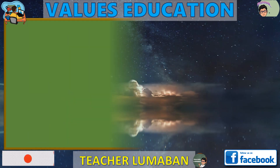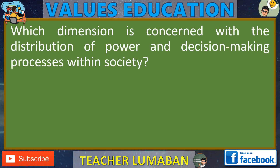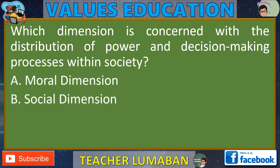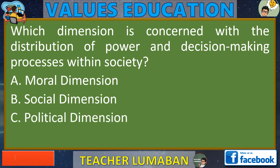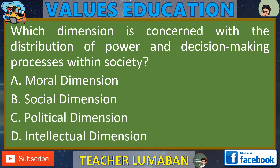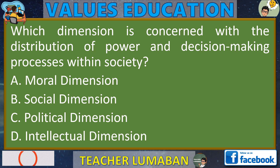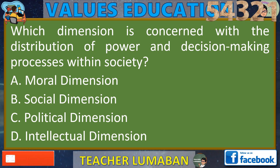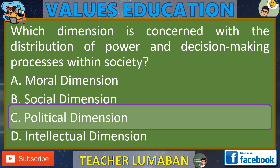Which dimension is concerned with the distribution of power and decision-making processes within society? Letter A: Moral Dimension. Letter B: Social Dimension. Letter C: Political Dimension. Letter D: Intellectual Dimension. In the next 5 seconds, select the best response from the available options. The correct answer is C, Political Dimension. Ang tamang sagot ay C, Political Dimension.